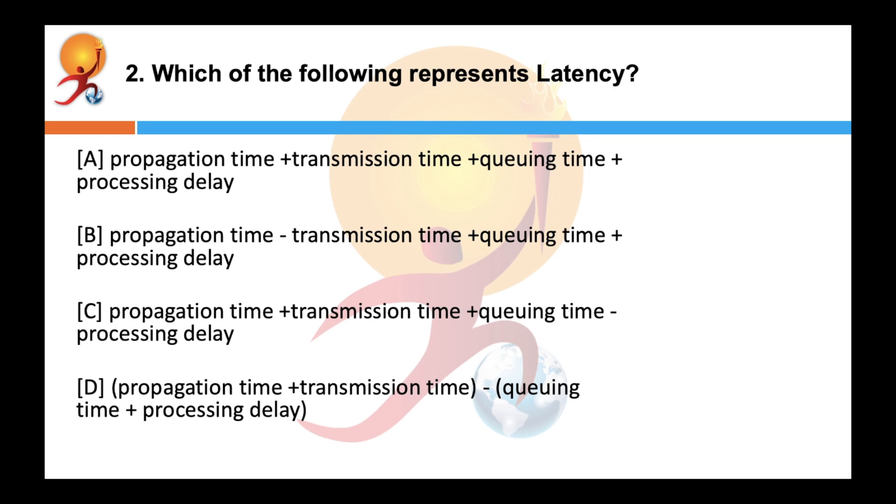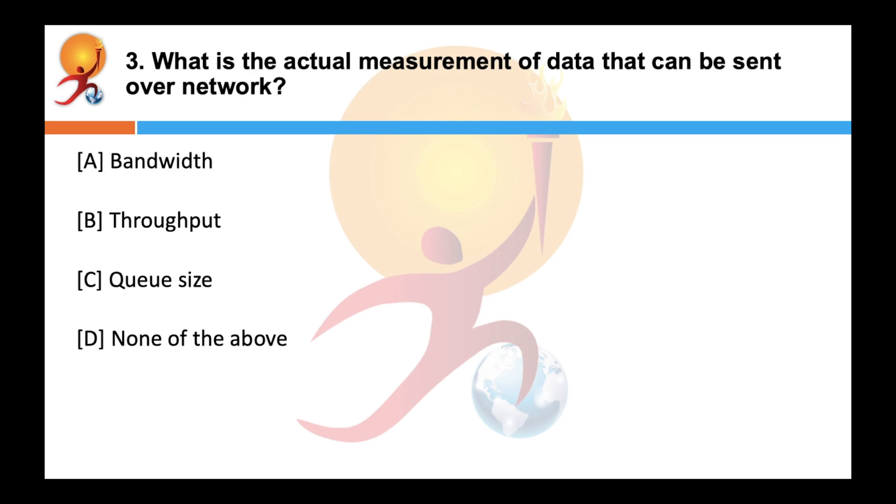Which of the following represents latency? We've already seen it in the first question. The answer is A. What is the actual measurement of data that can be sent over a network? Correct answer is throughput.